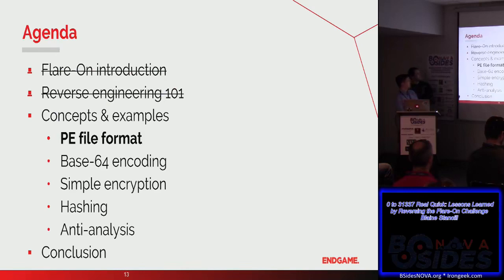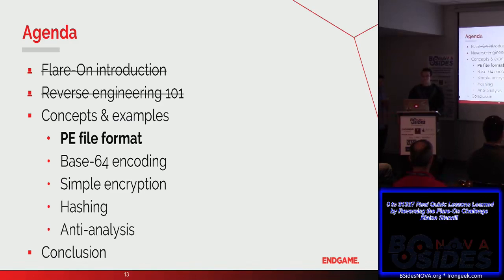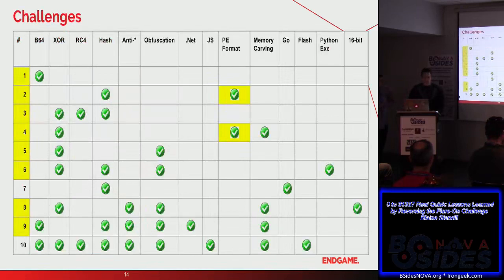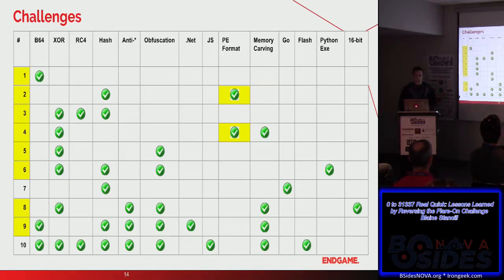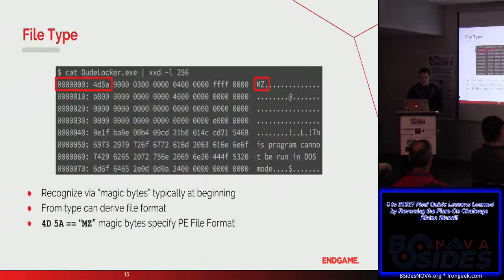Now we'll talk about key file formats. While you have basic reverse engineering under your belt, we're going to discuss some concepts that will really help with reverse engineering — things that, if you don't know ahead of time, you may spend a lot of time figuring out. We're first going to start with the PE file format for Windows executables. On the left I've highlighted the actual challenges that were Windows executables. For challenges two and four in particular, you can glean a lot of information just by looking at the file format itself, even before diving into static or dynamic analysis.